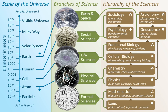Natural sciences, the study of natural phenomena including cosmological, geological, physical, chemical, and biological factors of the universe. Social sciences, the study of human behavior and societies. Natural and social sciences are empirical sciences, meaning that the knowledge must be based on observable phenomena and must be capable of being verified by other researchers working under the same conditions.